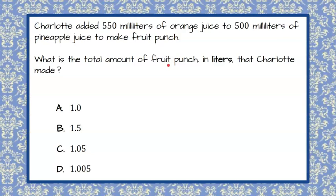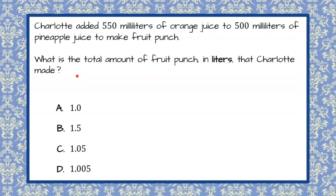Here's our question. Charlotte added 550 milliliters of orange juice to 500 milliliters of pineapple juice to make fruit punch. What is the total amount of fruit punch in liters that Charlotte made? I'm going to ask you to pause and solve now. Come back and hit play when you're ready to check your work.